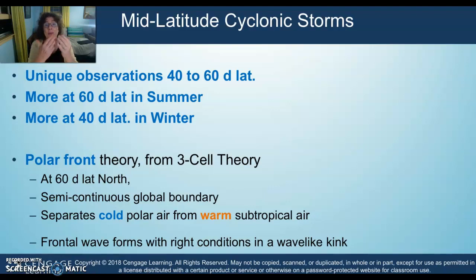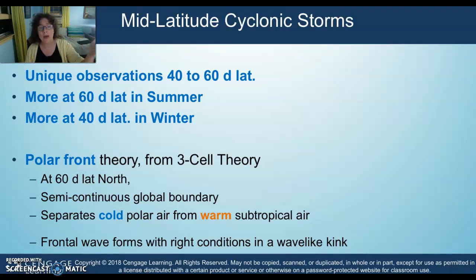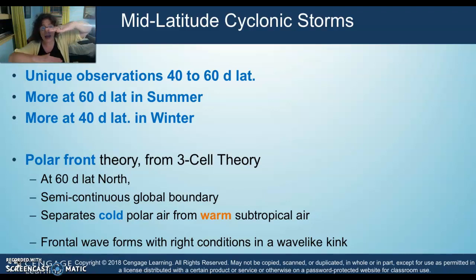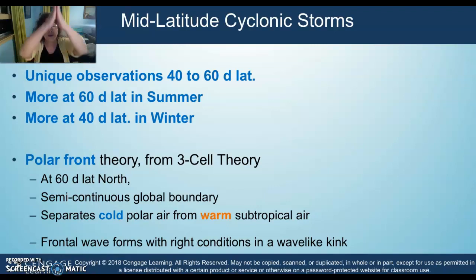The Polar Front Theory evolves out of the three-cell theory — the Hadley cell, the polar cell, and the Ferrel cell. This Polar Front Theory comes right out of the polar cell, which extends from 60 degrees north or south latitude to the poles. That 60-degree latitude is a very important global boundary between the cold polar air and the warm air that has moved up from the Hadley cell and the equator. You already know about the screaming 60s — lots of low pressure, semi-permanent lows in that area.